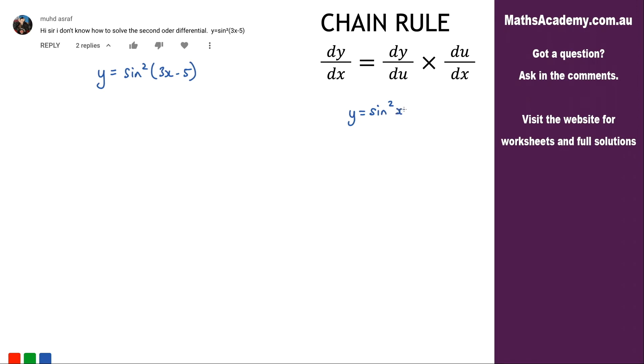Now what I'm going to do to differentiate this, I'm going to use the chain rule. You can see the chain rule written above here. So to use that I'm going to make a substitution of let u equals sine x. I'm going to differentiate that so du by dx is equal to cosine x. So when you differentiate sine you get cosine.